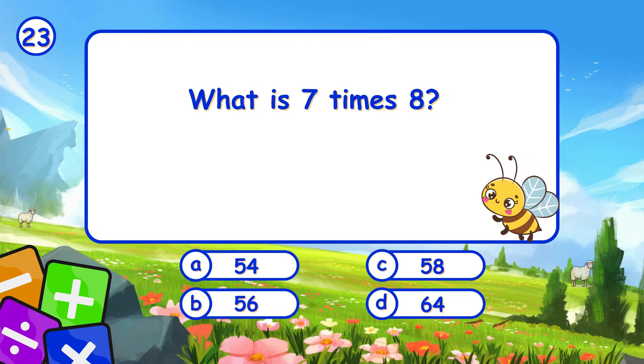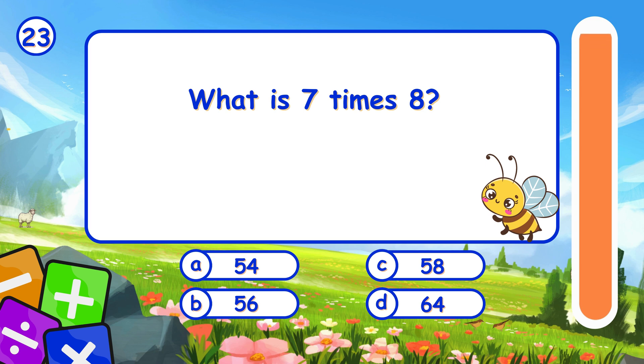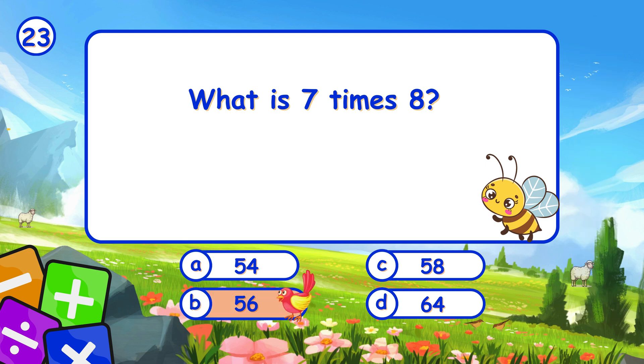What is 7 times 8? It's B, 56. 7 times 8 is 56.